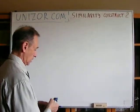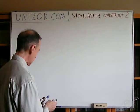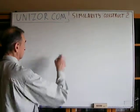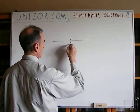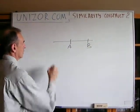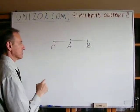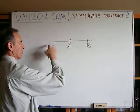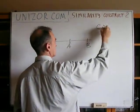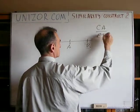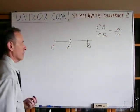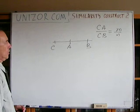If you have a segment AB, you have to find a point C outside of this segment on the same line in such a way that CA relates to CB as two given numbers.